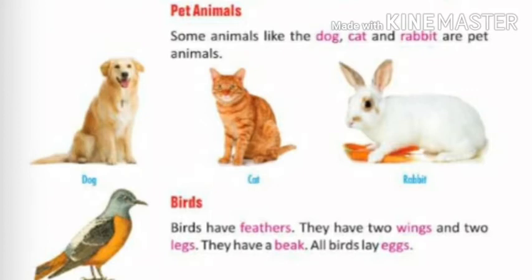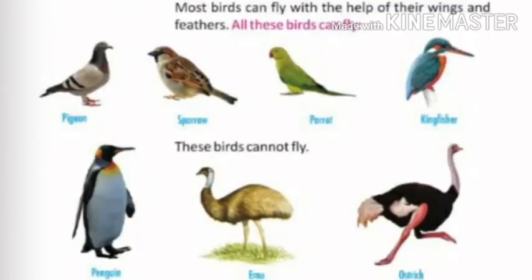Now we come to birds. Birds have feathers. They have two wings and two legs. They have a beak — that is what their mouth is called. All birds lay eggs. Can you name some birds? Look at the pictures — there are so many birds: pigeon, sparrow, parrot, kingfisher, penguin, ostrich, duck, swan. These are all birds.